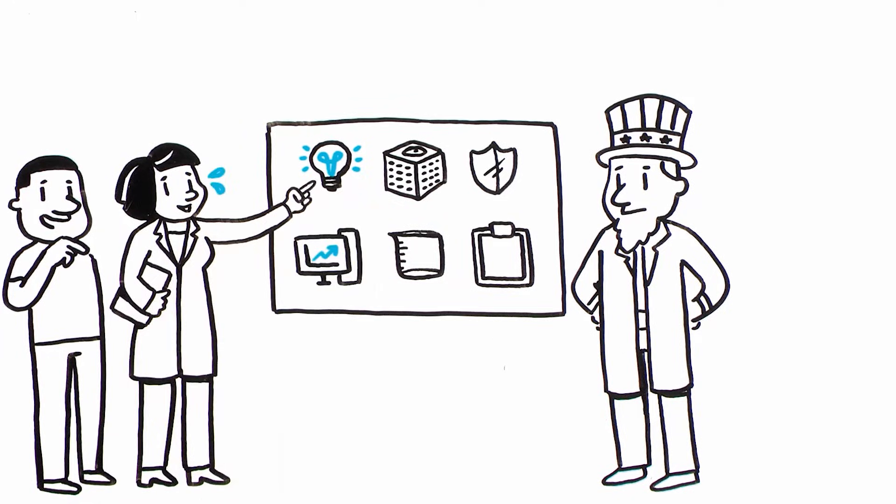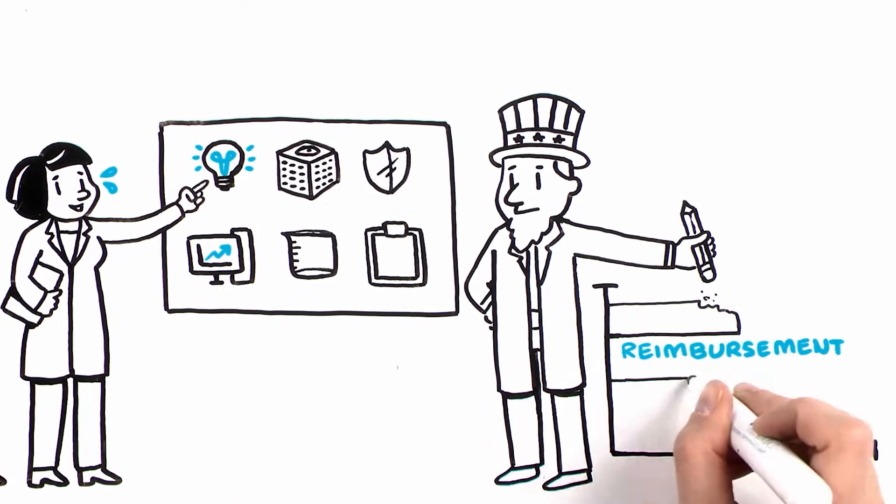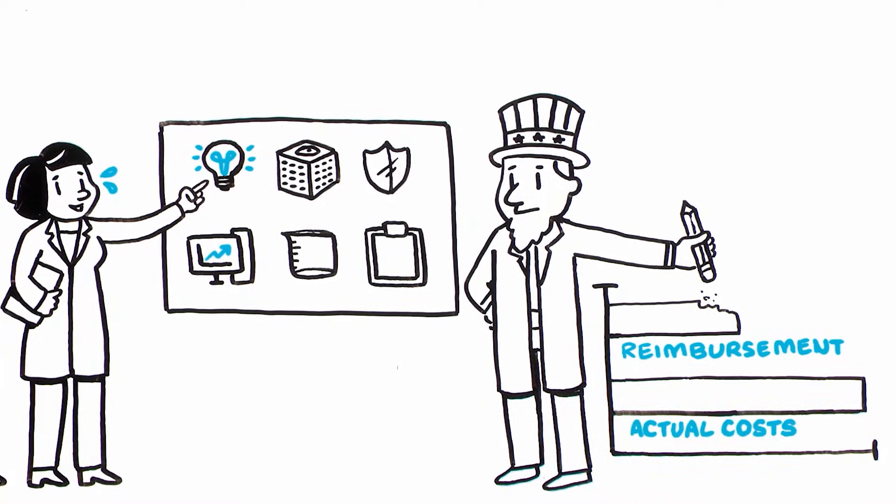Existing government-imposed reimbursement caps on certain types of research grants and on administrative costs further erode institutions' F and A cost reimbursement rates.